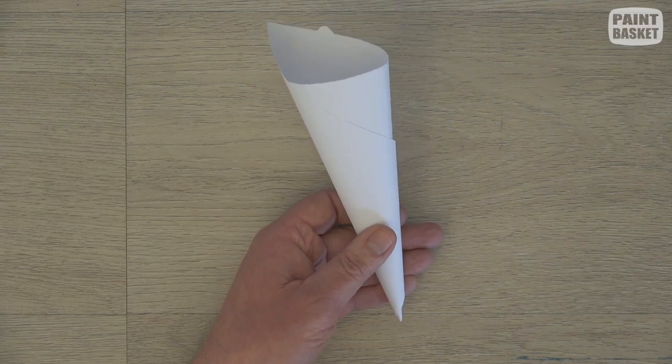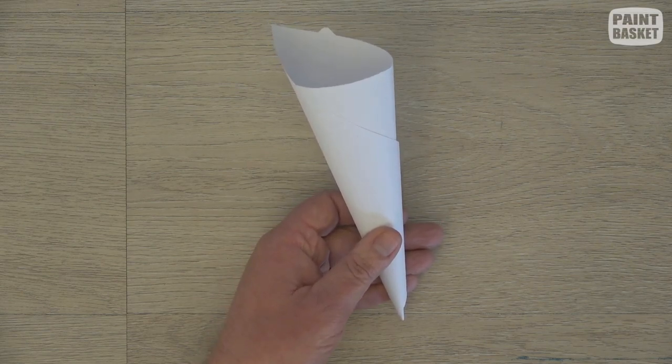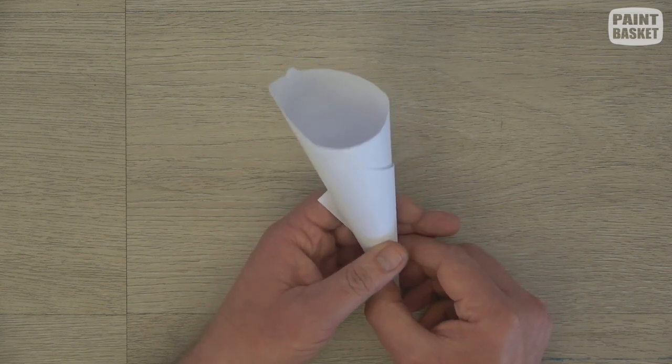All you're looking for is just getting yourself that ice cream shape. If it's not a sharp point over there or anything, it doesn't matter because you can adjust it. That's the good thing about these blending stumps.